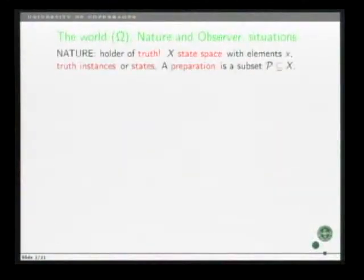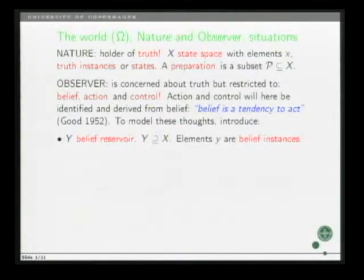Now we consider a world, Omega, whatever that means, but in the world you have two persons, nature and observer. Nature is a holder of truth, and to model that we introduce state space X, whose elements are referred to either as truth instances or simply states. A collection of states is a preparation.